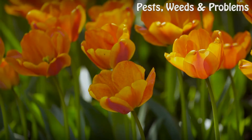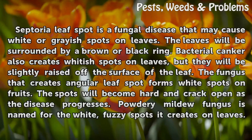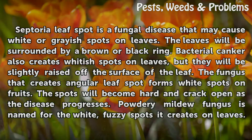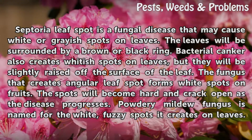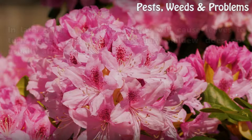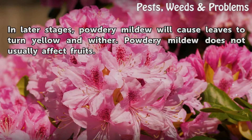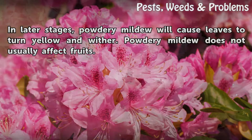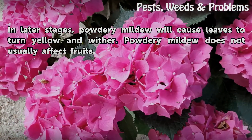Diseases. Septoria leaf spot is a fungal disease that may cause white or grayish spots on leaves. The leaves will be surrounded by a brown or black ring. Bacterial canker also creates whitish spots on leaves, but they will be slightly raised off the surface of the leaf. The fungus that creates angular leaf spot forms white spots on fruits. The spots will become hard and crack open as the disease progresses. Powdery mildew fungus is named for the white, fuzzy spots it creates on leaves. In later stages, powdery mildew will cause leaves to turn yellow and wither. Powdery mildew does not usually affect fruits.